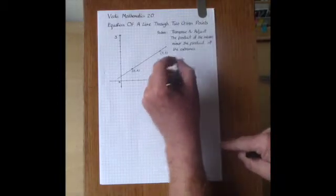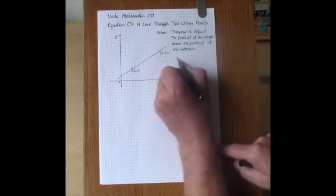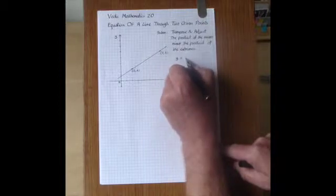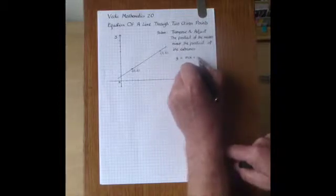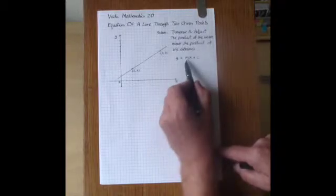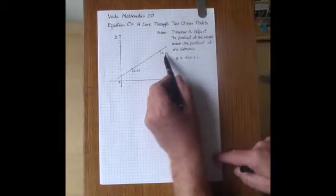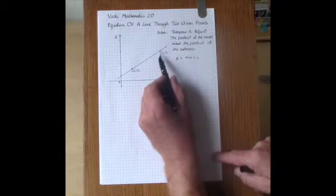So the conventional method starts with the form Y equals MX plus C, and we first work out the gradient M as the change in Y divided by the change in X.